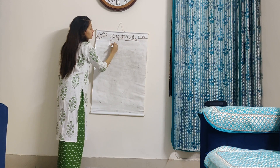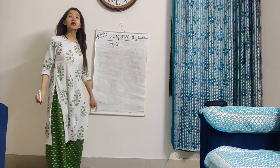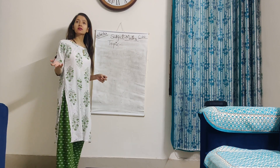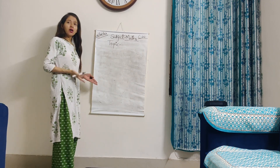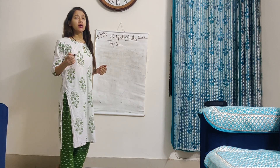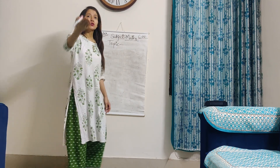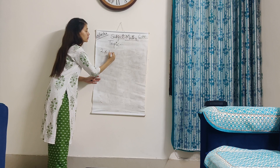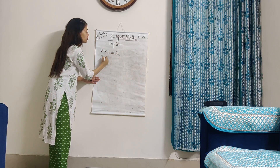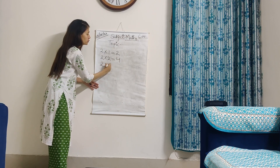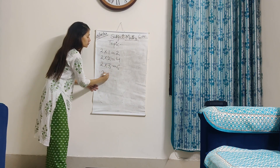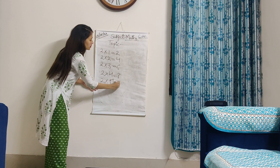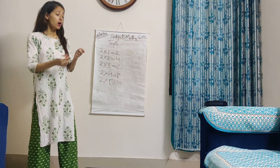Subject and topic. Before telling you the topic, I want you to tell me one thing. How do you write tables? Can anyone come here and tell me how do we write tables? Can you write the table of 2? Yes, Ritu you come. So we write tables like this: 2 ones are 2, 2 twos are 4, 2 threes are 6, 2 fours are 8, 2 fives are 10. This is the way to write tables.